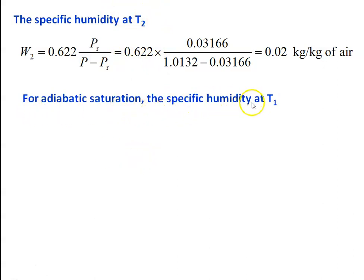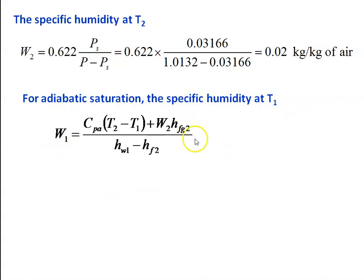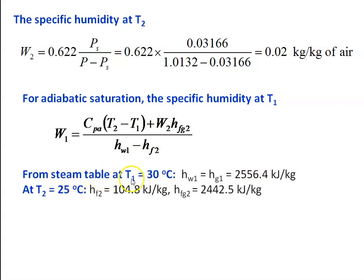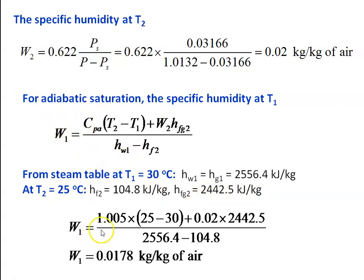For the adiabatic saturation process, the specific humidity at T1 is: W1 = Cpa × (T2 − T1) + W2 × HFG2 / (HW1 − HF2). From the steam table at T1 = 30°C: HW1 = HG1 = 2556.4 kJ/kg. At T2 = 25°C: HF2 = 104.8 kJ/kg, HFG2 = 2442.5 kJ/kg. Substituting: Cpa = 1.005, T2 − T1 = 25 − 30 = −5, W2 = 0.02. Calculating gives W1 = 0.0178 kg/kg of air.